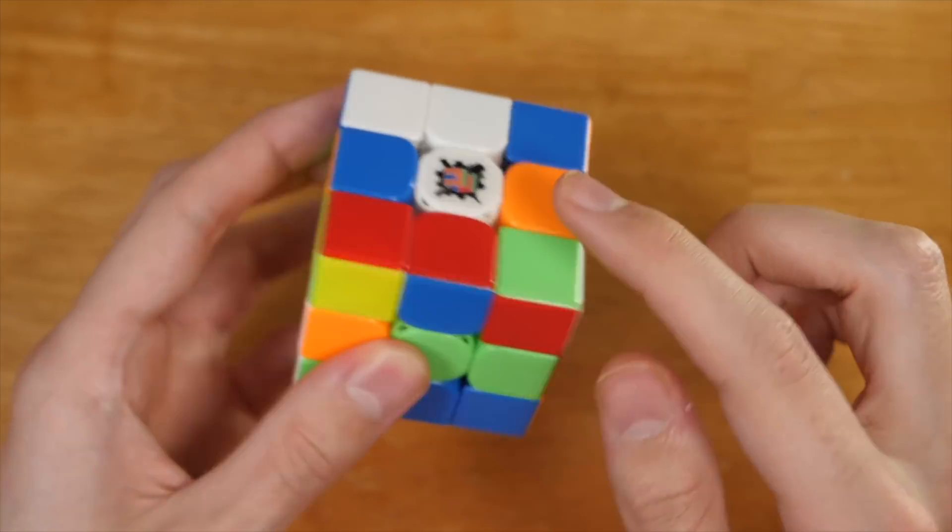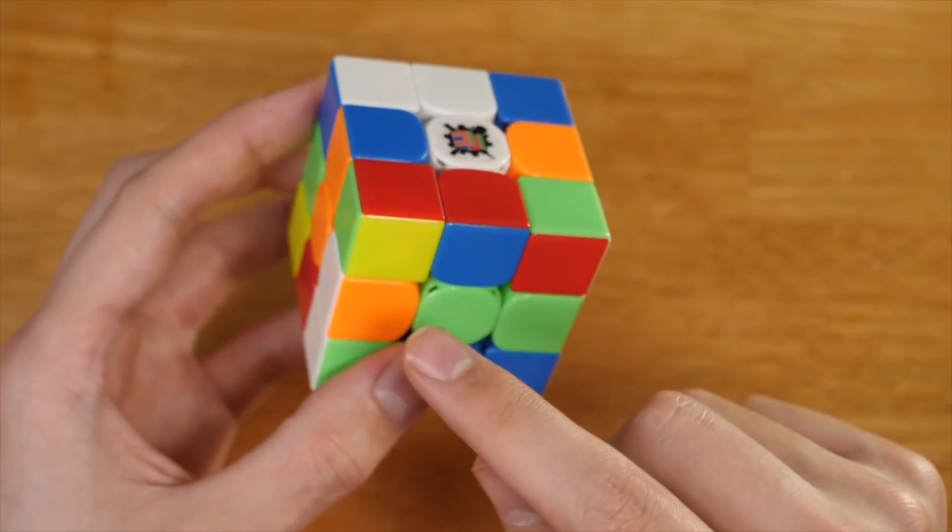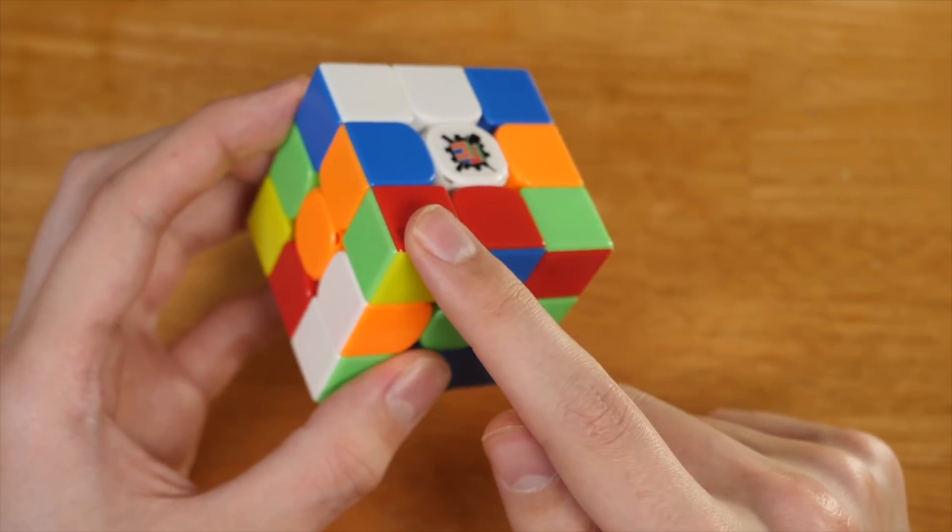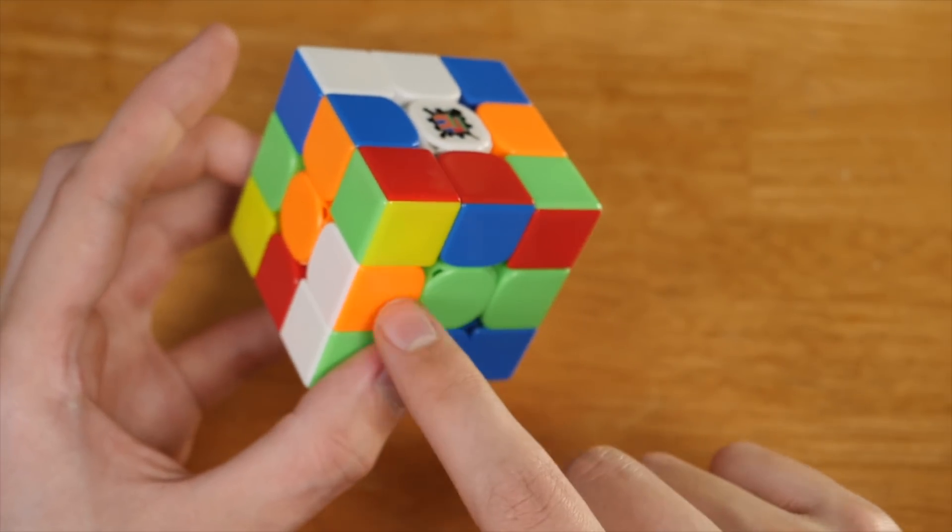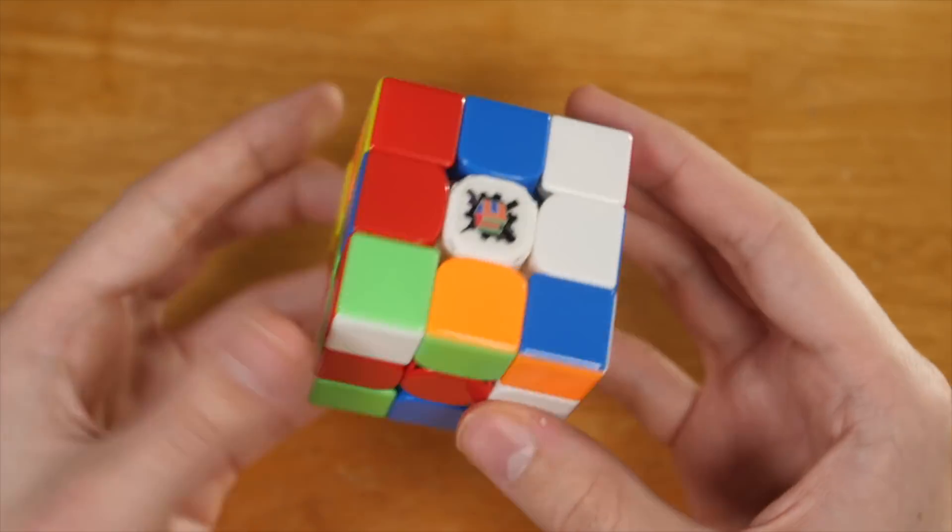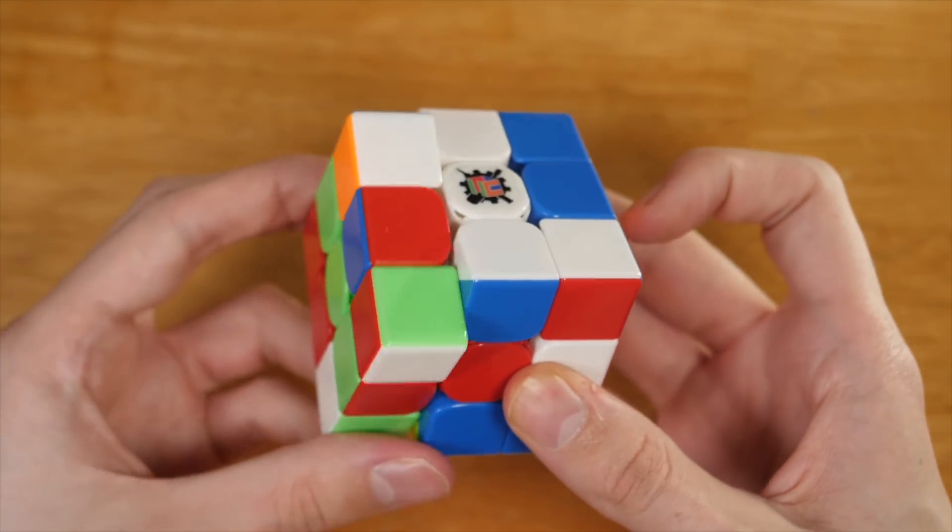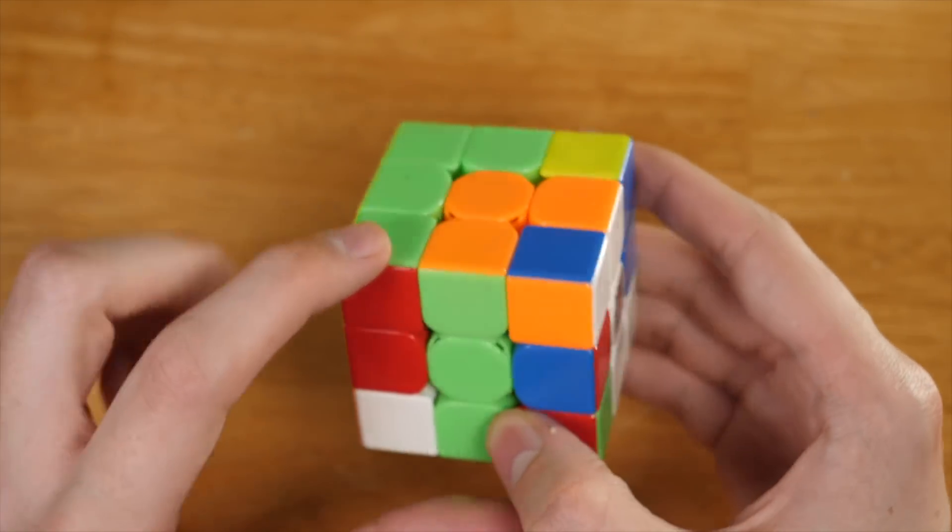And we're setting up these two opposite from each other, and so we need to get the green-red spot under the orange-green edge. Now we can insert these into the back, a very nice pseudo-pair. And now you can see that we've solved these two edges and these two corners.